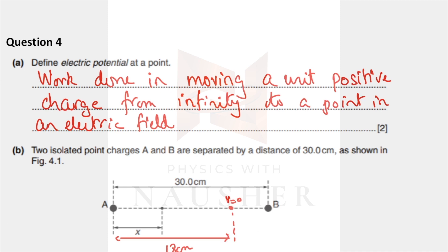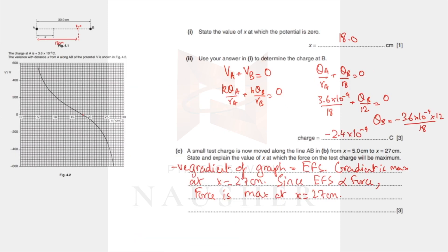Next: define electric potential at a point. The work done in moving a unit positive charge from infinity to a point in an electric field. Now they have given you a potential distance graph and they're asking you the value of x at which the potential is zero. You can see the potential is zero at this point. At this point the distance is 18 centimeters, measured from A.